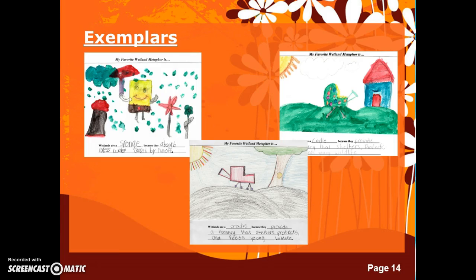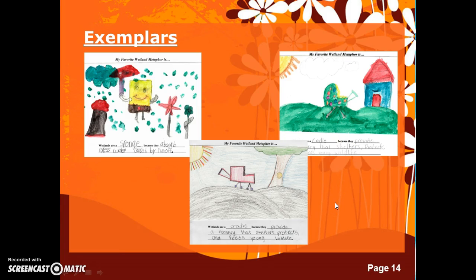Now you're getting the picture — try these! Here are three exemplars that show how we can pictorially represent our metaphors. Here we have the wetland metaphor — it's like a sponge because wetlands absorb excess water caused by runoff in the water cycle. Another example: a wetland is like a cradle because it provides shelter and protects the wildlife. You're only limited by your creativity. Use the strategies we've learned in this video to help you create your own metaphors or analogies to understand ecosystems.